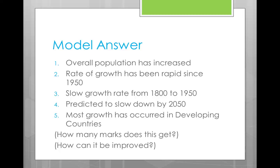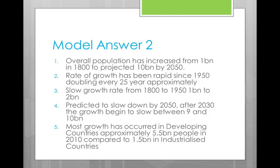The reality is that if we wrote everything listed, we'd probably get 2 out of 3 marks. The reason is that we are missing data. A 3-mark answer — or one that exceeds the requirements — would include specific figures. For example, the overall population has increased from 1 billion in 1800 to a projected 10 billion by 2050. Also note that at no point should you be trying to explain why this is occurring; we shall look at that in our next session.